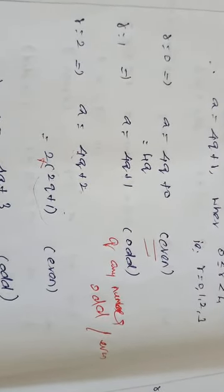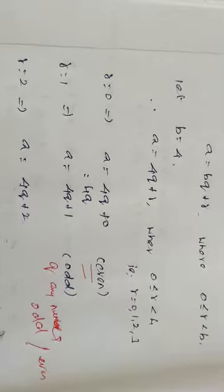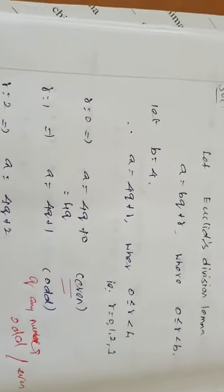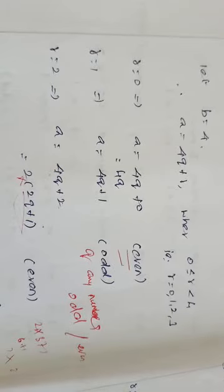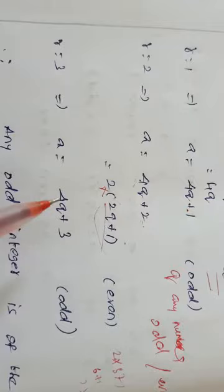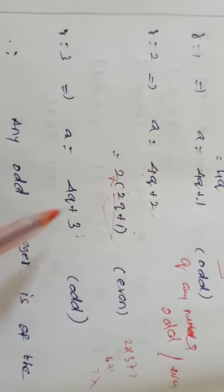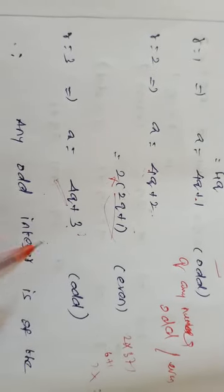So 4q plus 1 is an odd number and 4q plus 2 is an even number. Next, if R equal to 3, then A equal to 4q plus 3. We know that 4q is an even number and 3 is an odd number. Addition of an even number and one odd number gives an odd resultant. So 4q plus 3 is an odd number.